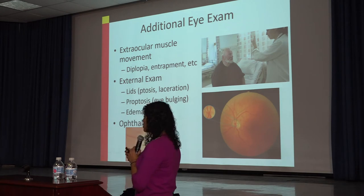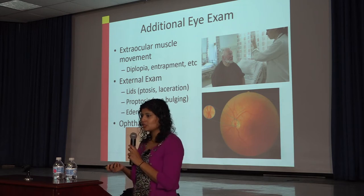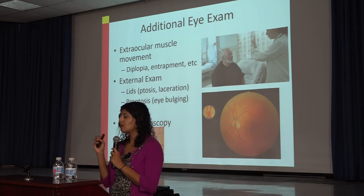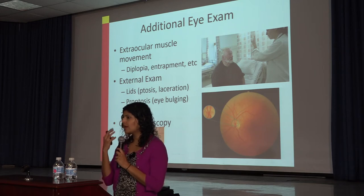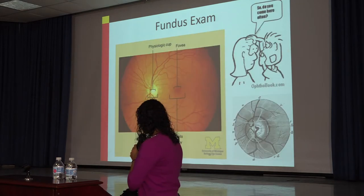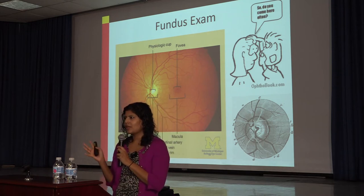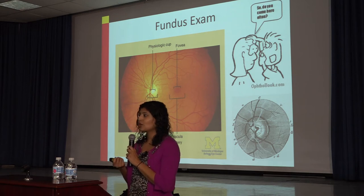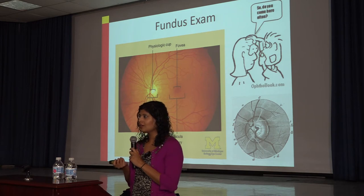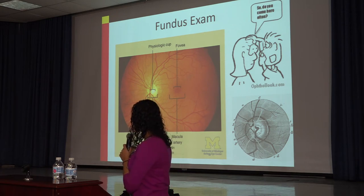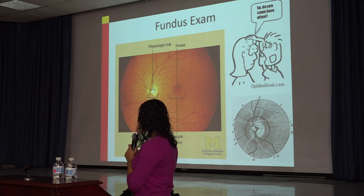Additional eye exam elements include extraocular movements — looking for double vision or muscle entrapment — and a thorough external exam. You can look at the lids for droopy eyelids, cuts, proptosis, or swollen eyelids, which can indicate underlying issues like thyroid eye disease. And of course, ophthalmoscopy — looking into the back of the eye. Using a direct ophthalmoscope is a skill; the first few times it's helpful to try on someone you can dilate. You should at least be able to identify the optic nerve, the arcades, and the macula.